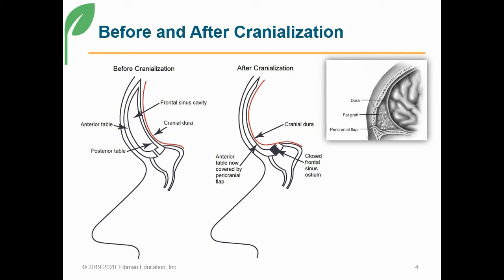They will plug it usually with a fat graft, and then they will use the pericranial flap. The pericranial flap is a piece of the galeal aponeurosis layer — it's like the fascia inside the head — and this is going to seal over the ostium plug and cushion the brain within the new area that's now part of the cranial cavity. The picture shows the use of that optional fat graft in the little inset up in the right, which would further cushion the brain.